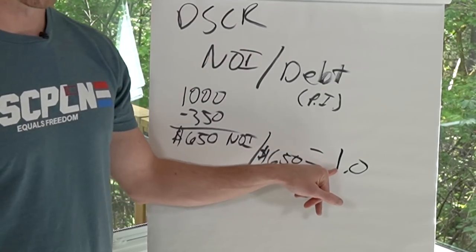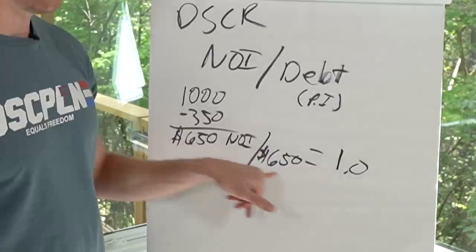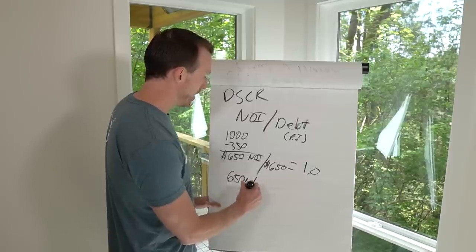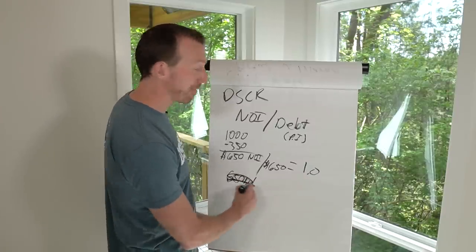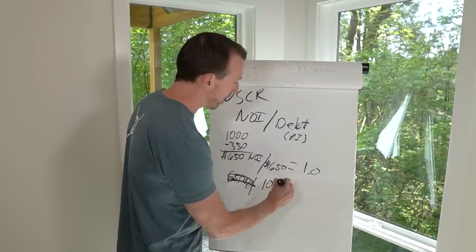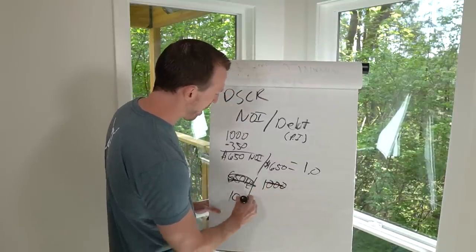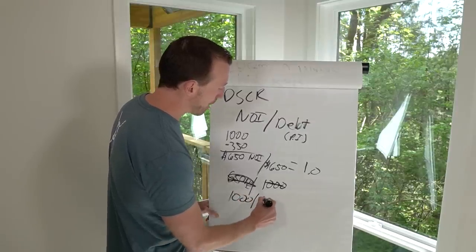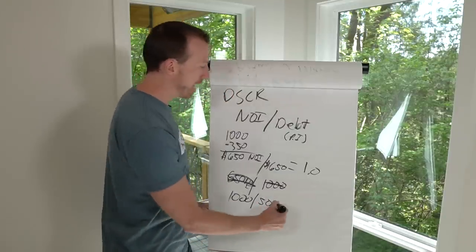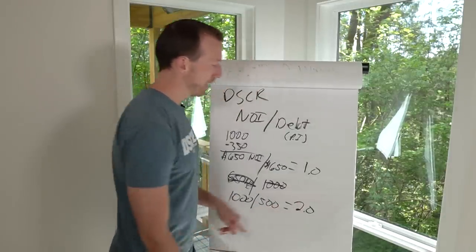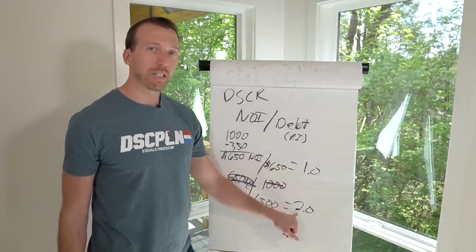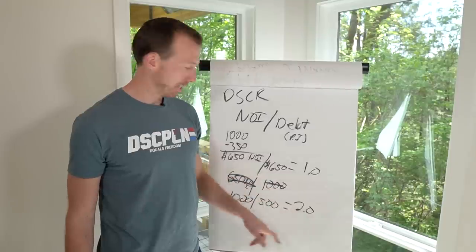Let's use easier math: say your NOI is $1,000 a month and your mortgage payment is $500 a month. $1,000 divided by $500 equals 2.0 — that's a great debt service coverage ratio. A 1.0 just breaks even; a 2.0 is double break-even — that's awesome. If you have a property doing a 2.0 DSCR, keep it. Don't sell it, especially in today's market.